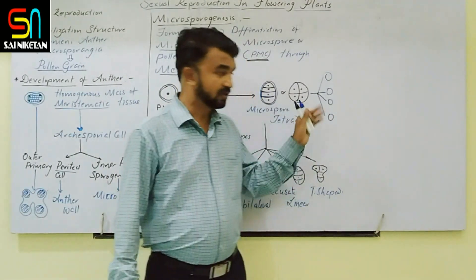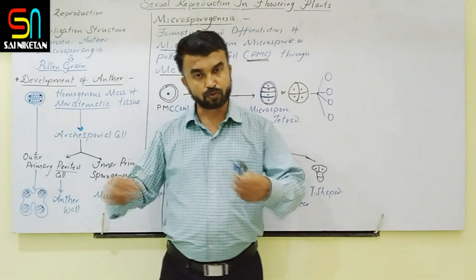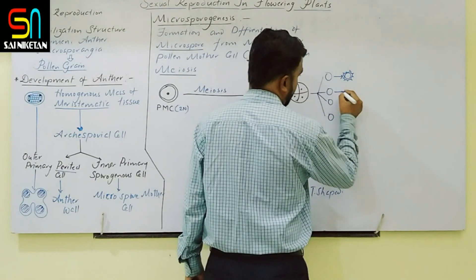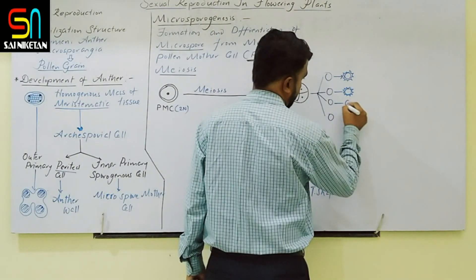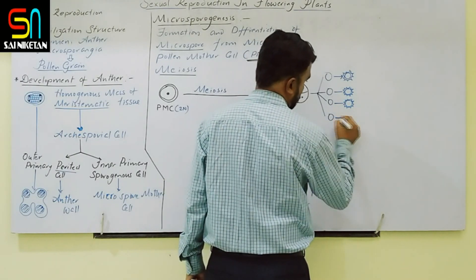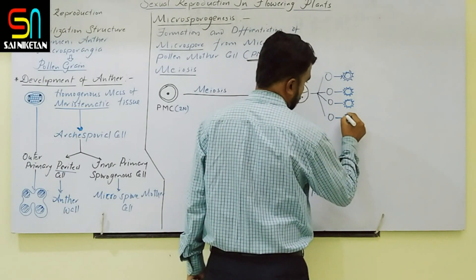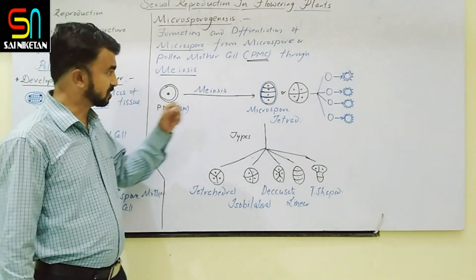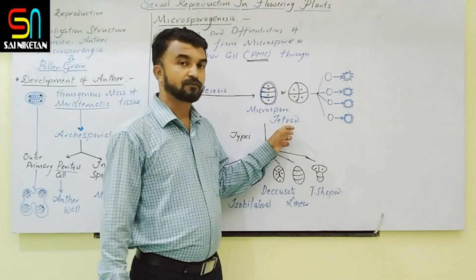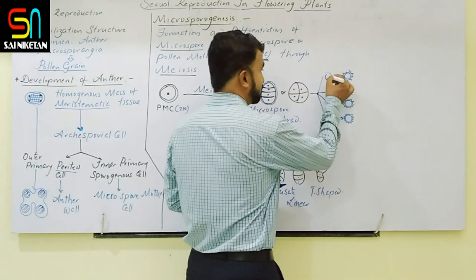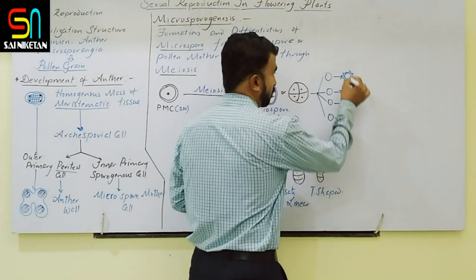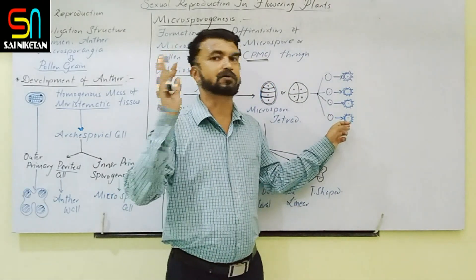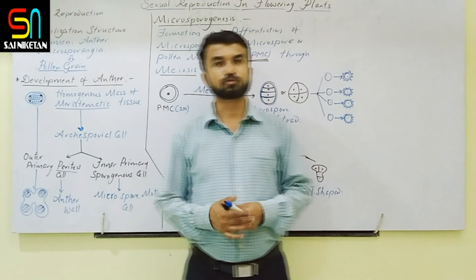Once all four microspores are separated, each microspore has the potential to develop into a separate pollen grain. So from a single microspore mother cell, four microspores are produced in a tetrad, and from each microspore one pollen grain is produced — meaning four pollen grains are produced per pollen mother cell. Based on this, numerical problems can be asked. For example: if each microsporangium contains 100 pollen mother cells, how many pollen grains are produced in a dithecous anther?